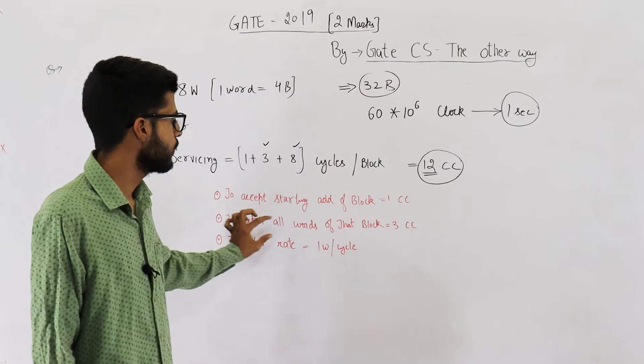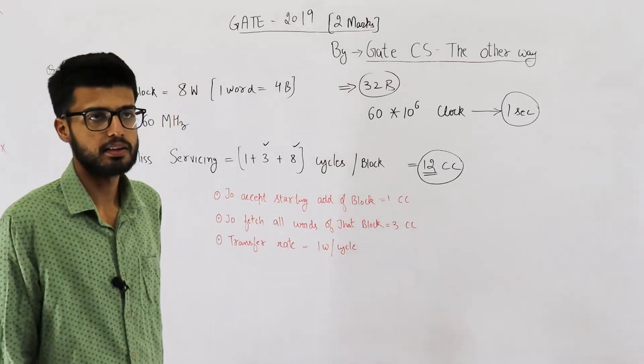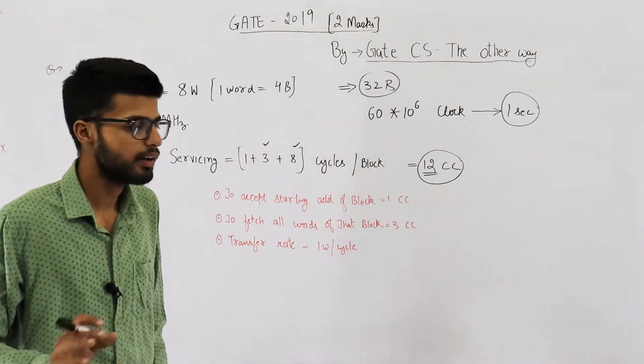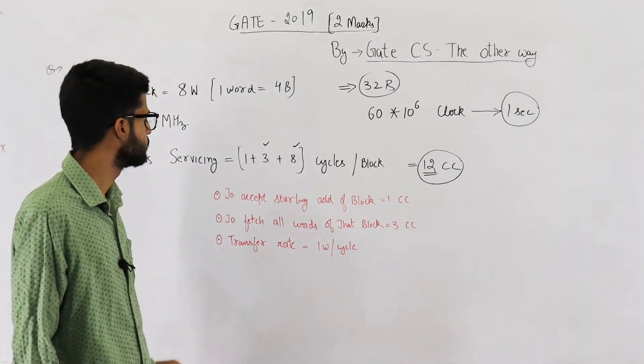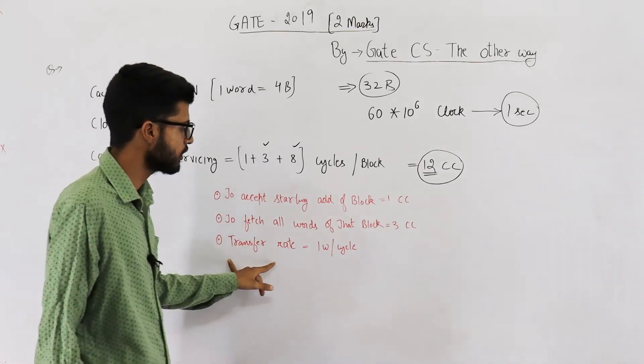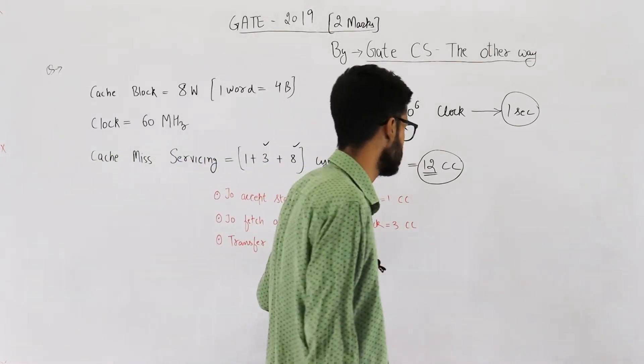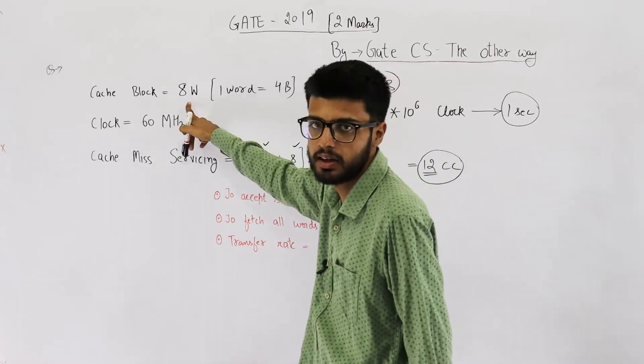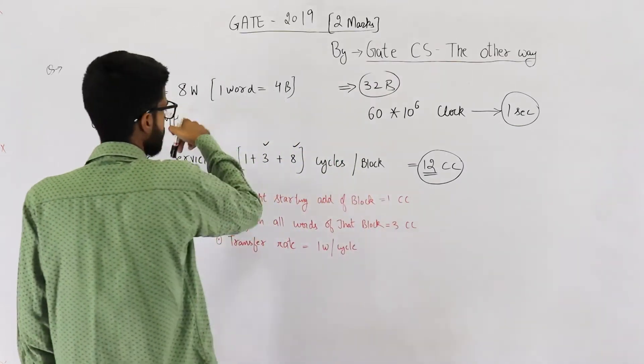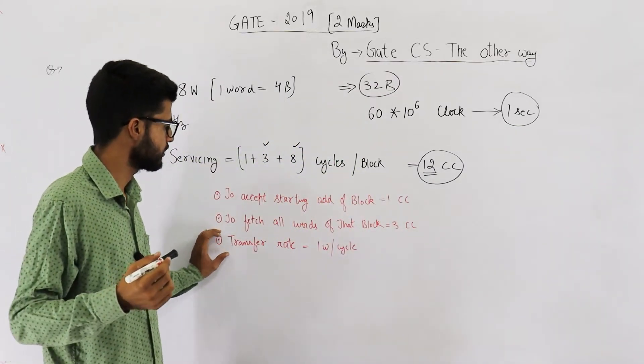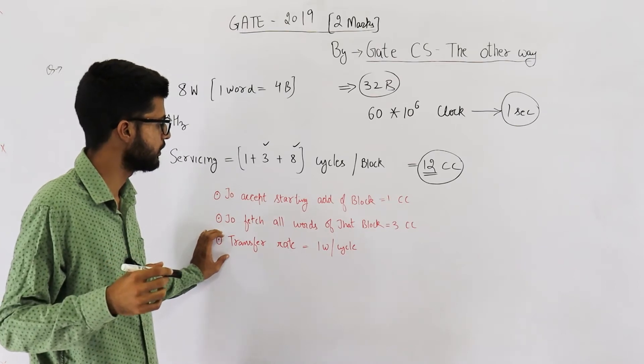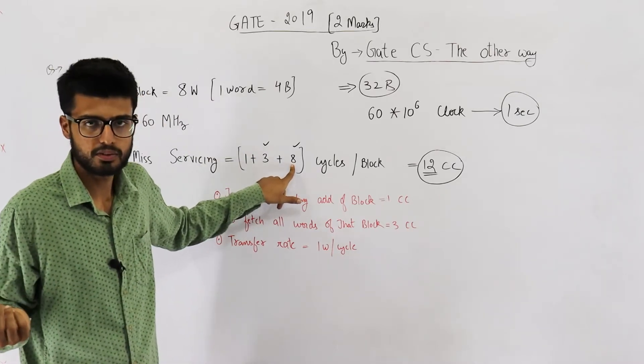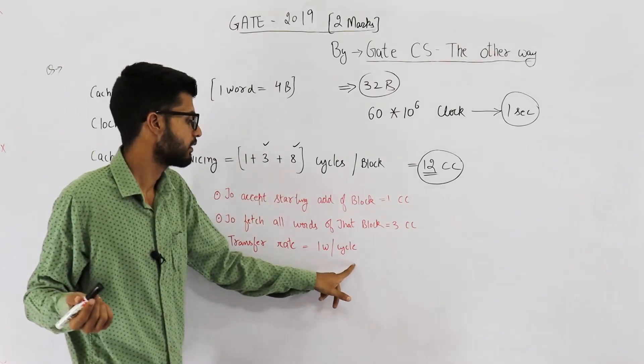Anyways, then they are saying, to fetch all the words of that block, three clock cycles are needed. So, these three clock cycles are needed to buffer the data in the primary memory only. And after that, they have given transfer rate of one word per cycle. One word per cycle. Also, there are eight words in the entire block. That's given in the question. So, you can just see how many cycles will be needed. Because we have eight words in a block. So, eight clock cycles will be needed to transfer at this rate.